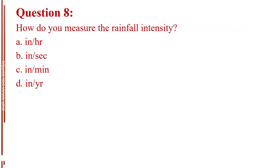Question number 8. How do you measure the rainfall intensity? Letter A, inch per hour. Letter B, inch per second. Letter C, inch per minute. Letter D, inch per year. The answer is Letter A, inch per hour.